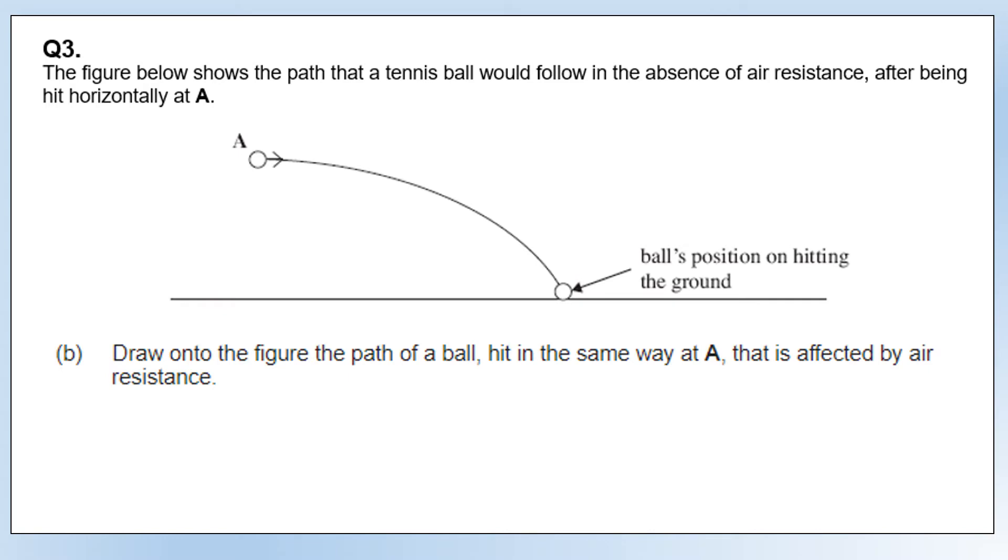Draw on figure B the path of the ball hit in the same way at A but affected by air resistance. Now the velocity in the horizontal direction is not going to be constant; it's going to decrease over time. So we'd expect it to have a shorter range with air resistance, like this.